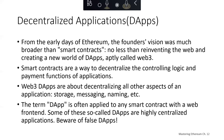From the early days of Ethereum, the founders' vision was broader than just smart contracts. They wanted to create a new world of decentralized apps, which they called Web3. You can look at smart contracts as a way to decentralize the controlling logic and the payment functions of applications. Web3 dApps are about decentralizing the other aspects of an application beyond just the control logic and payment functions — namely storage through things like Swarm and IPFS, messaging through things like Whisper, and naming through the Ethereum naming service.